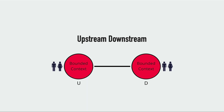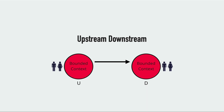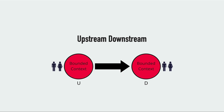Then there's the upstream-downstream relationship, as you can see with the U and the D labels. In these relationships, the actions of an upstream team will have an effect on the downstream team, but the actions of the downstream team do not have a significant impact on the upstream team. This power dynamic is pretty one-sided and puts the downstream team in a precarious position, and that's why they will often need some protection, with anti-corruption layers often deployed in situations like this.